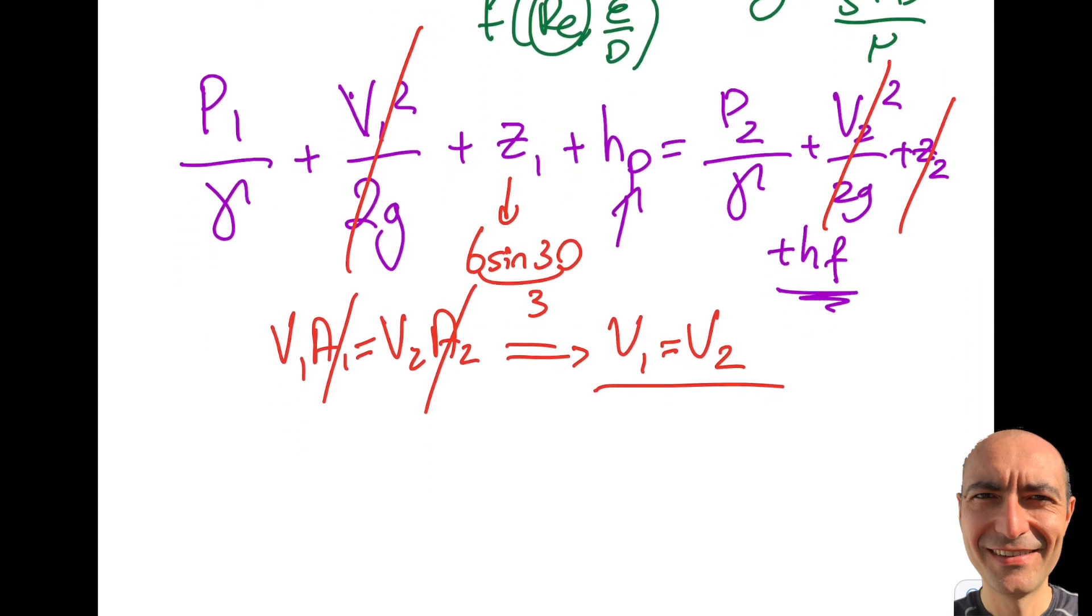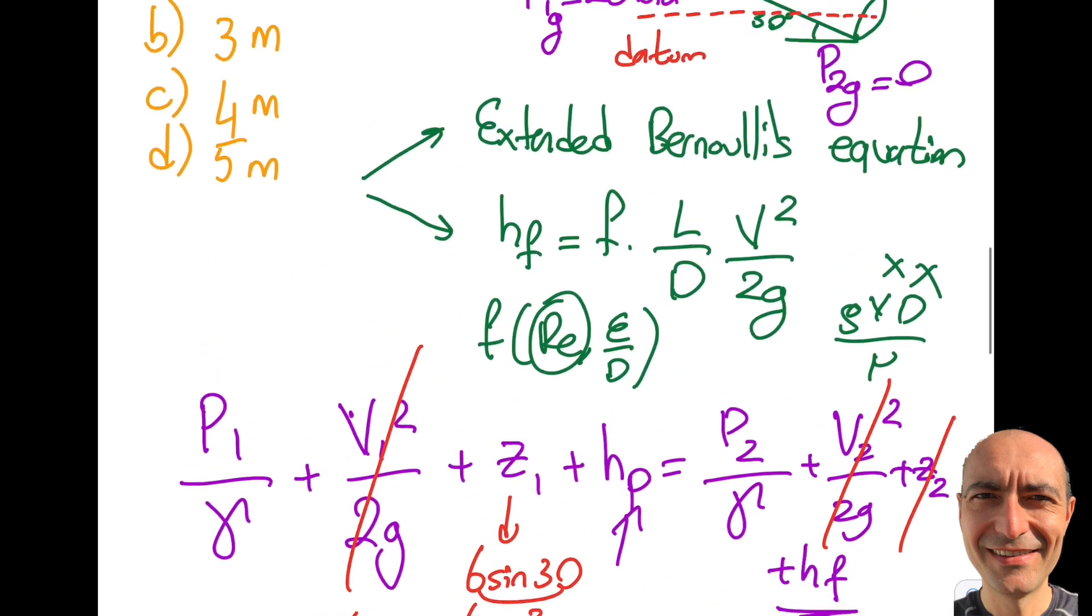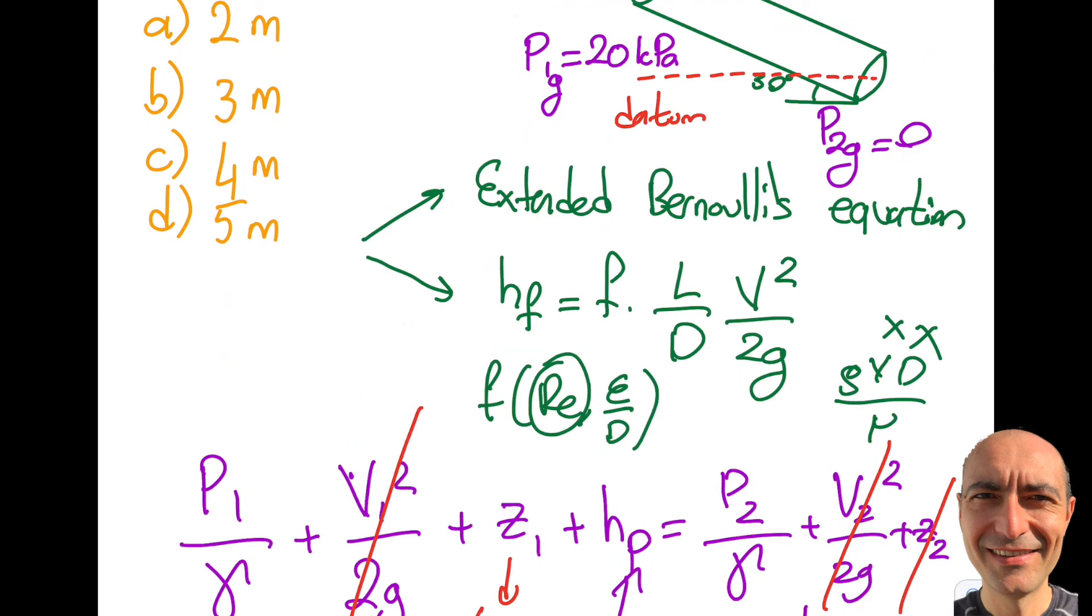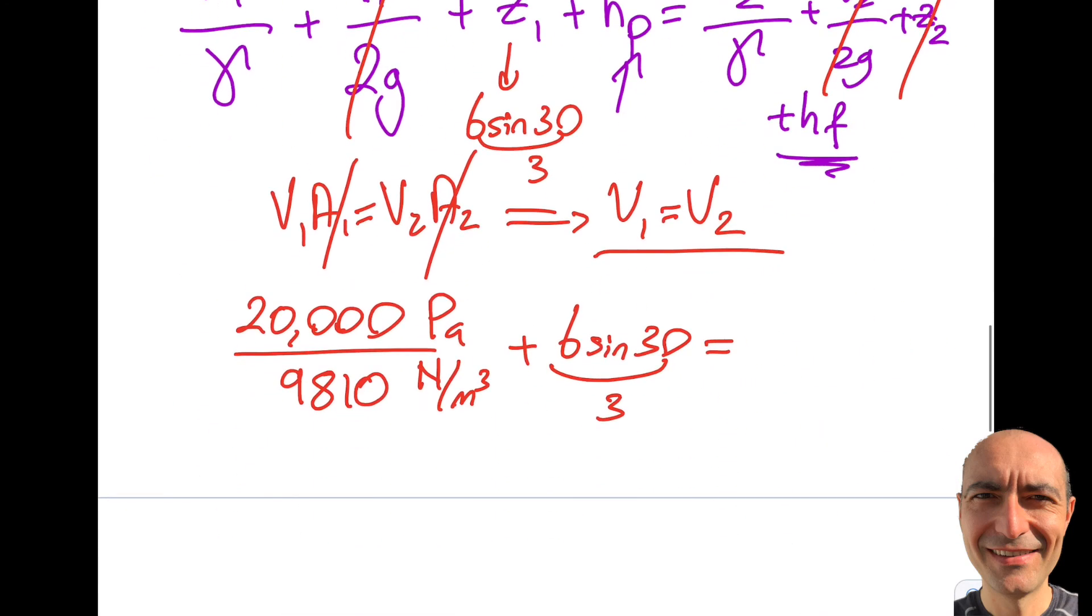So let's look at the p1. p1 is 20 kilopascal. That's given to me. So 20,000, don't forget to convert the Pascals. Specific weight is, let's use units as well, Pascal. And this is 9,810 Newton per meter cube. That is given to me in the reference manual. Plus 6 times sine of 30, which is actually 3. Will be equal to, what is p2? We said that it has been exposed to atmosphere at the exit. So that is gone. The only thing left on the right hand side is hf.